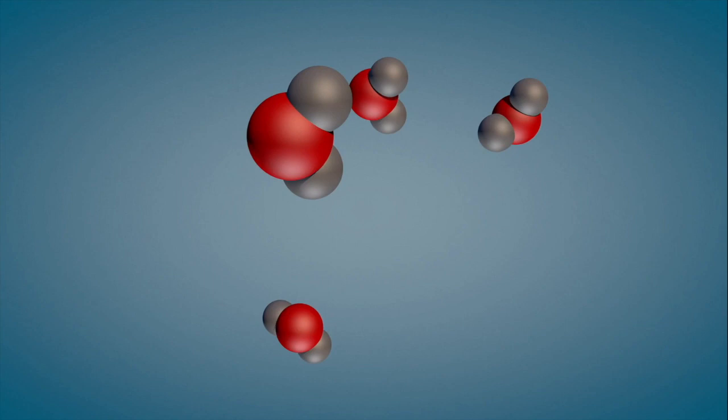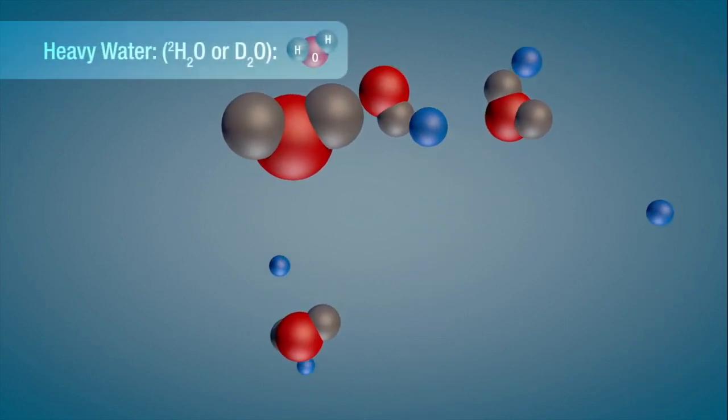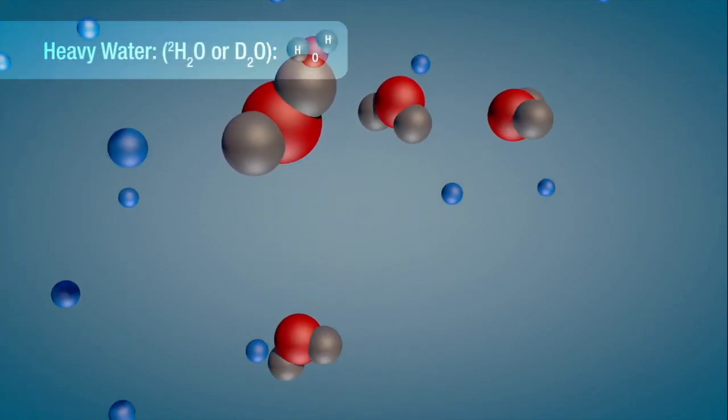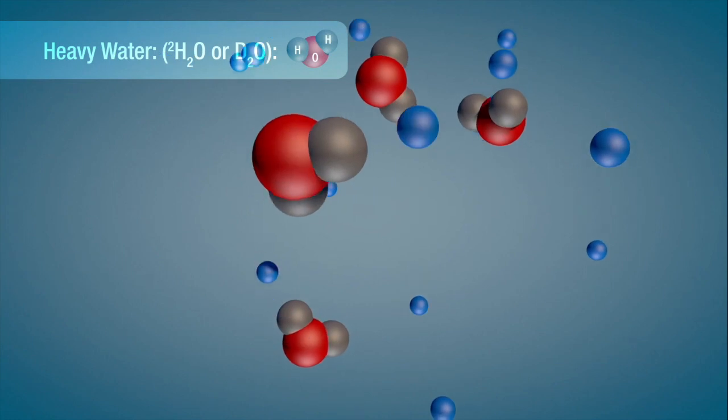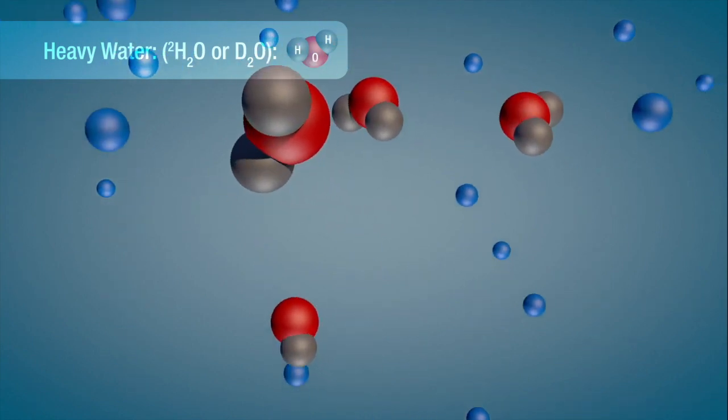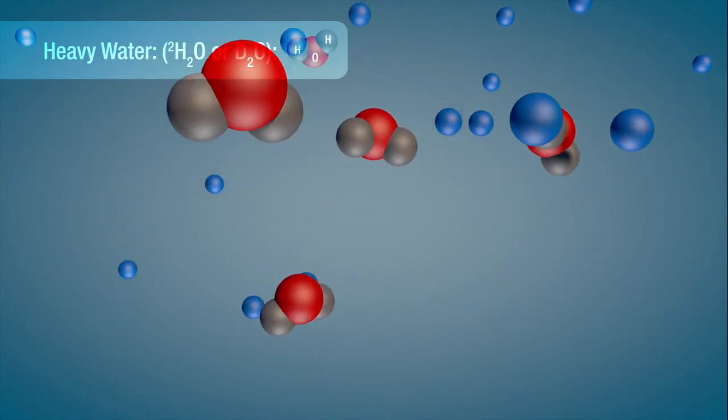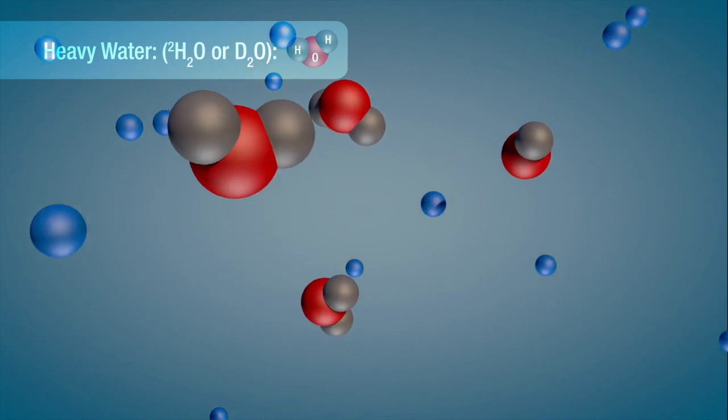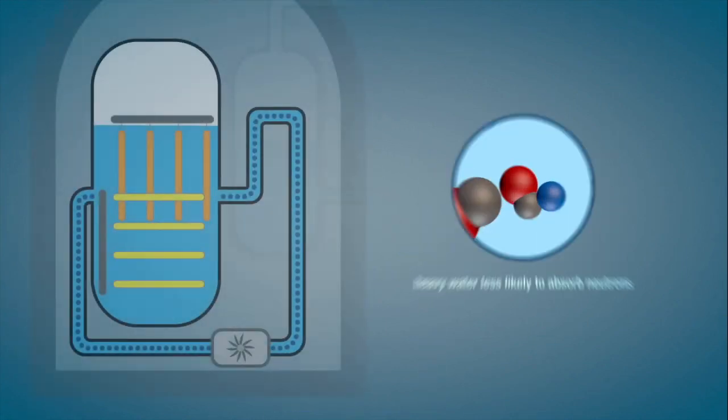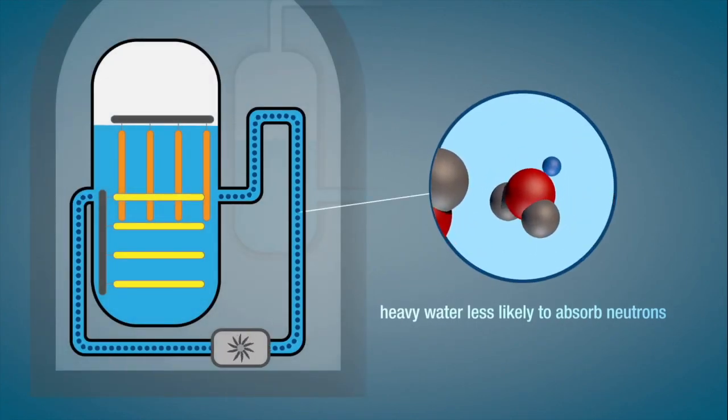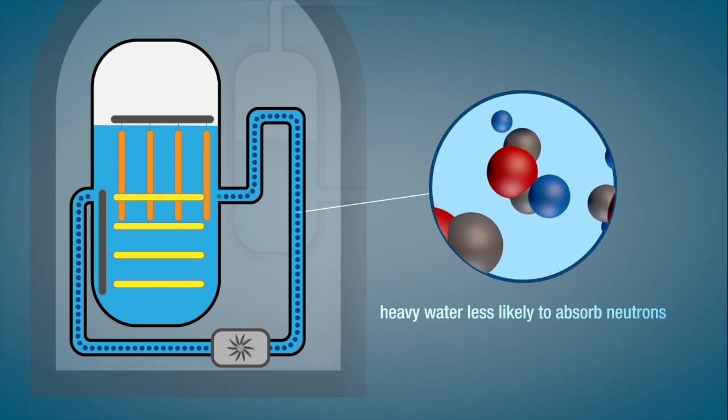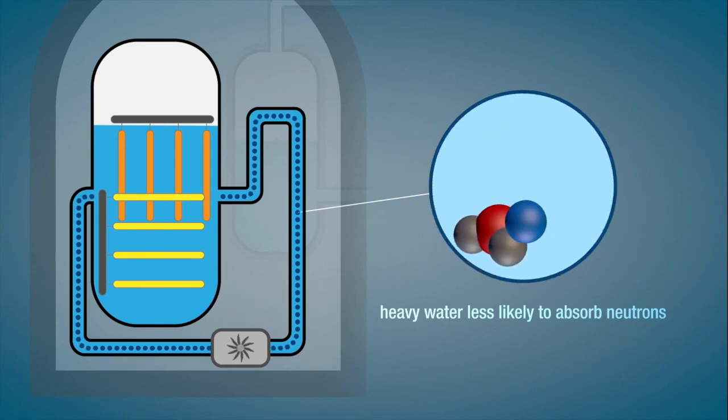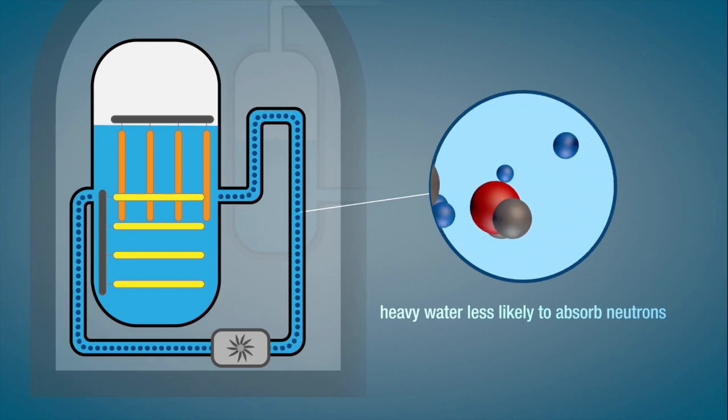Heavy water comes to the rescue. Heavy water contains a different form of hydrogen called deuterium that already has one neutron. Heavy water is much less likely to absorb free neutrons. When heavy water is piped through the fuel channels, it absorbs heat but does not slow the reaction process nearly as much as normal water.